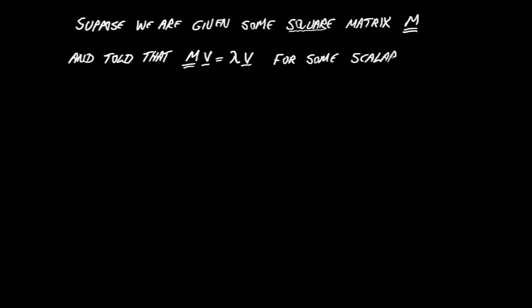So suppose that we are given a square matrix M, just some matrix, but we are told that M multiplied by V is equal to lambda multiplied by V for some scalar, just some number lambda, and for some column matrix V. And a column matrix, of course, the same as a vector. I will just say vector from now on.